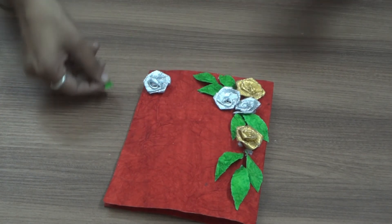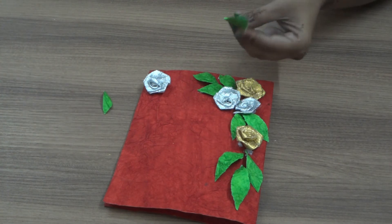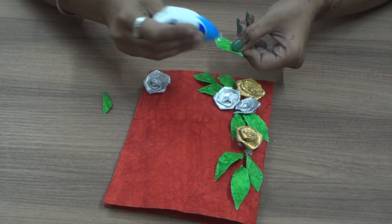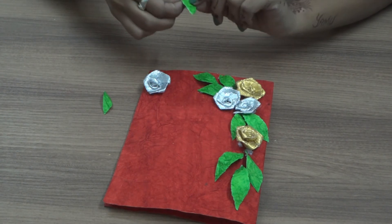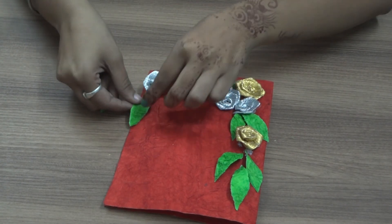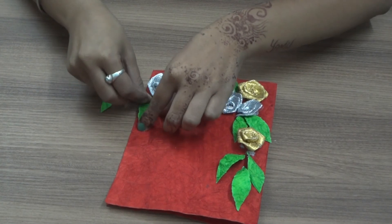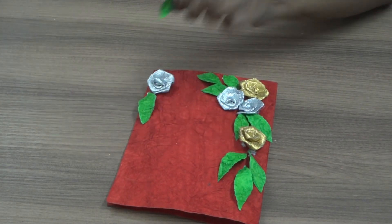Take one small leaf and fold it in the corner and fold it in the middle of the leaf.